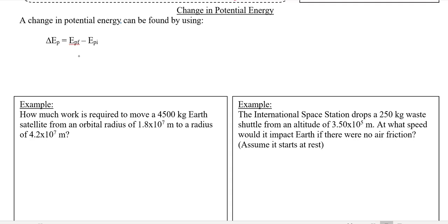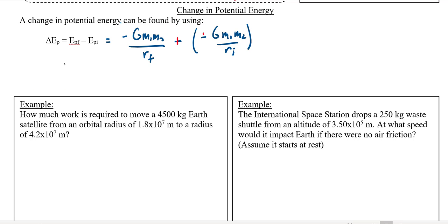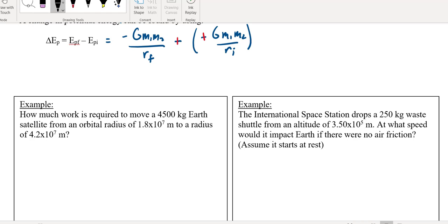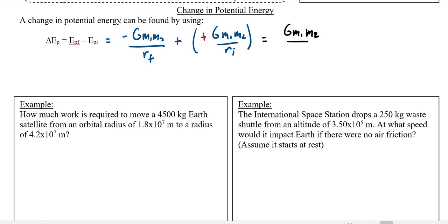We know that a change in anything is final minus initial, but just make a note of what happens when I sub in my values. Final potential energy equals negative GM₁M₂ over r_final, and I'm going to subtract from that negative GM₁M₂ over r_initial. Well, these negatives cancel out. So I could rewrite this whole thing as GM₁M₂ over r_initial minus GM₁M₂ over r_final, which looks really weird because we've probably spent the last year and a half convincing you that a change in anything is always final minus initial. But when it comes to potential energy, it looks like initial minus final, and that's just because there was a negative sign out front the whole time.